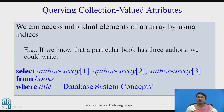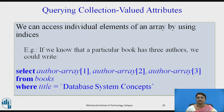For accessing individual array elements when we know how many authors a particular book has, the query is: SELECT author_array[1], author_array[2], author_array[3] FROM books WHERE title = 'Database System Concepts'. Here we are accessing individual elements from the array by their index positions.